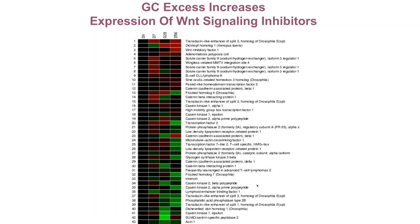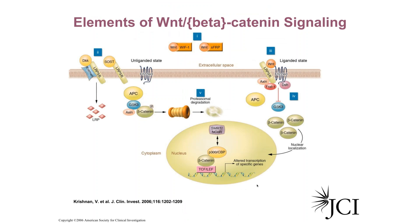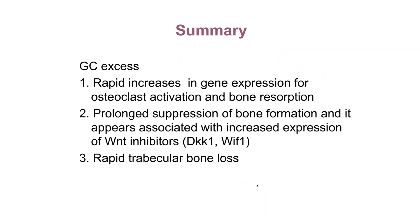Looking at gene expression in a microarray, we found very quickly increased gene expression of Wnt inhibiting proteins. DKK1 and sclerostin — inhibitors of osteoblast maturation and activity through the Wnt pathway — were increased in the presence of glucocorticoids. This showed that glucocorticoid excess caused rapid increases in gene expression for osteoclast activation and bone resorption, and prolonged suppression of bone formation associated with increased expression of these Wnt inhibitors, resulting in rapid trabecular bone loss.